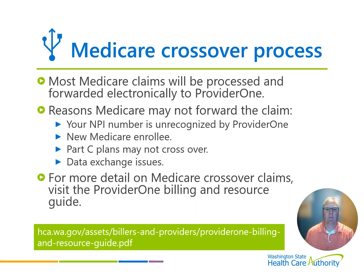Here is a quick overview of the crossover process in general. Most crossover claims are processed and forwarded directly to Provider One and, if billed correctly, processed without any issue. The crossover process is covered in detail in the Provider One Billing and Resource Guide with the link provided here. But here are a few reasons Medicare cannot forward your claim to us: perhaps your NPI number is unrecognized by Provider One, it may be a new Medicare enrollee, Part C plans may not cross over, or there may be data exchange issues.